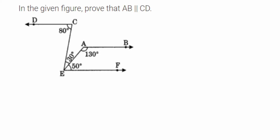Here is an interesting question from lines and angles. The question is: in the given figure, prove that AB is parallel to CD. We will not go directly to prove this. First we're going to prove that line CD is parallel to EF, and then we're going to show that EF is parallel to AB, and then automatically AB and CD will be parallel. The first aim is to show that EF and DC are parallel.